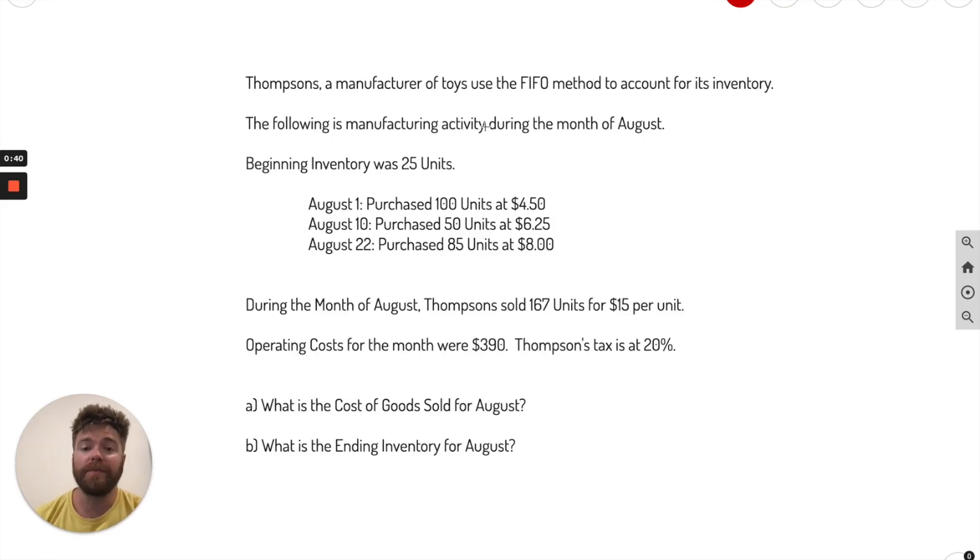Okay, so let's go through this big problem here. We'll go ahead and underline and highlight the most important points. Thompson's, a manufacturer of toys, uses the FIFO method to account for its inventory. The following here is the activity during the month of August. Beginning inventory was 25 units. They made some purchases: August 1st, they purchased 100 units at $4.50 each, then 50 units at $6.25, and 85 at $8.00.